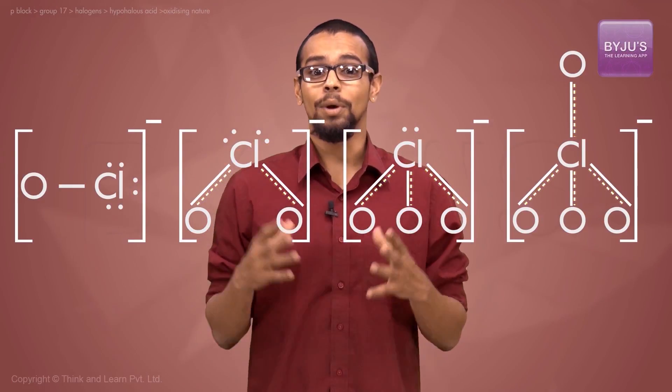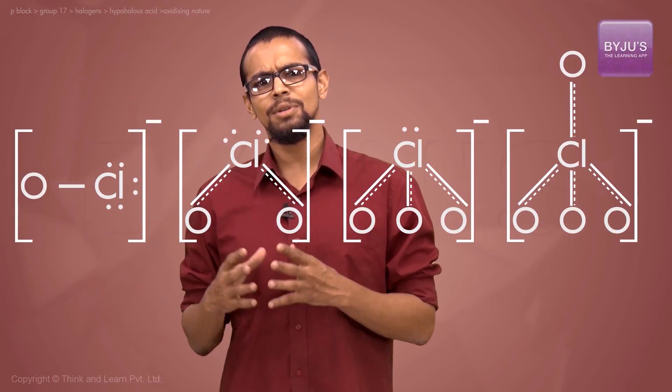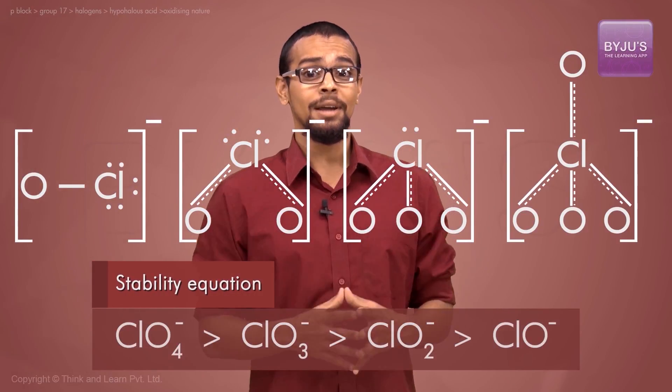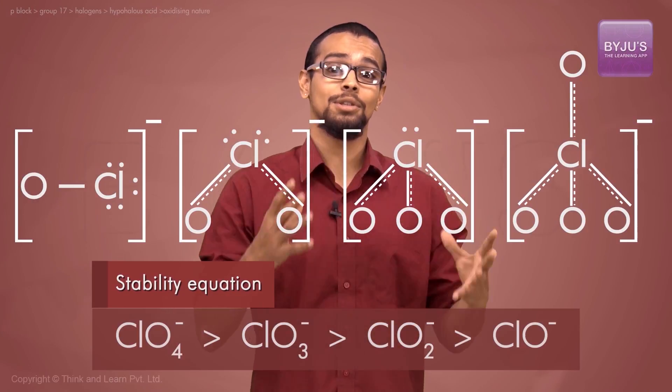With increased number of oxygens around the halogen atom, we find that the negative charge is better dispersed with multiple pπ-dπ dispersion, back bonding, and others, as compared to a halogen which is bonded to a lesser number of oxygen atoms. In other words, the stability of the ion is greater in the case where there are more oxygens along with the halogen.